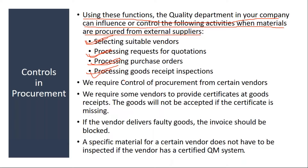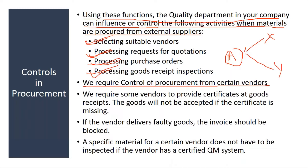In procurement activity, if you have controls in procurement, you can control procurement for certain vendors. For example, suppose your company is purchasing material A from two vendors - supplier X and supplier Y. If supplier X is not supplying good quality material, you can block that supply using controls in procurement.